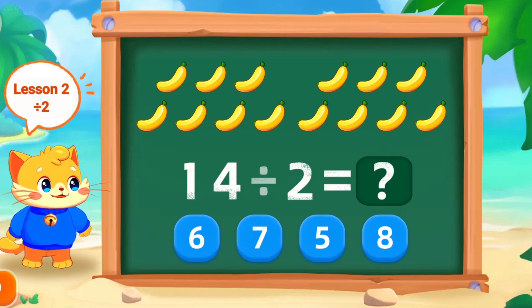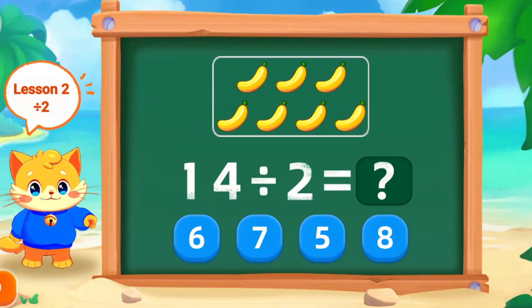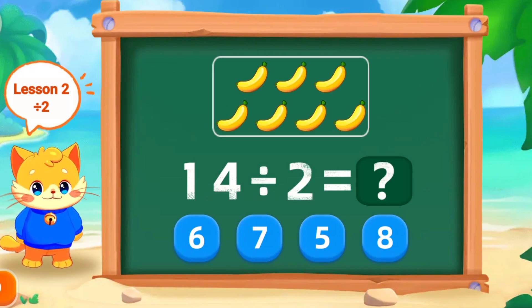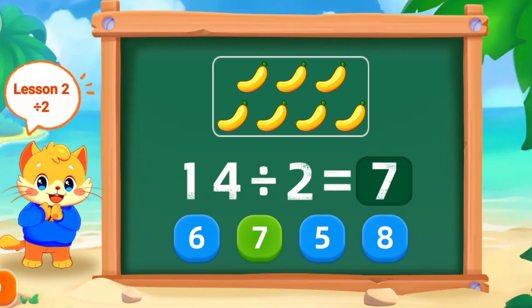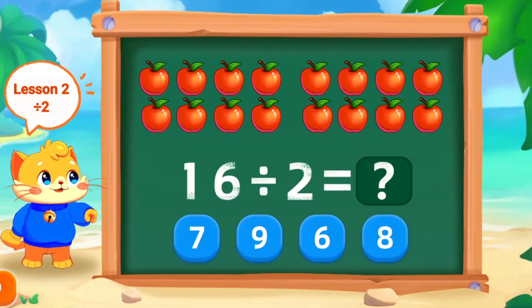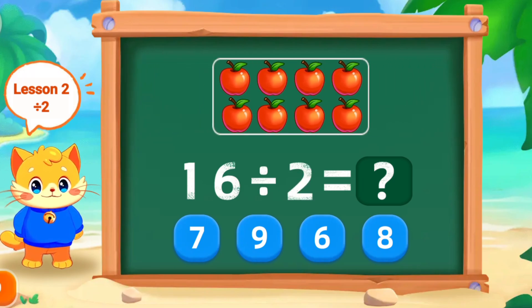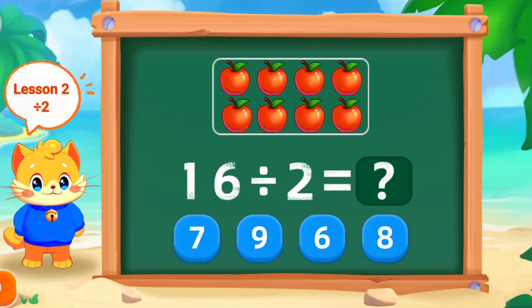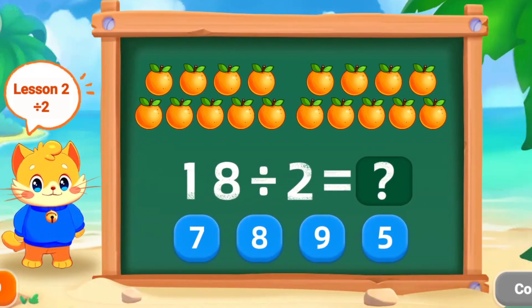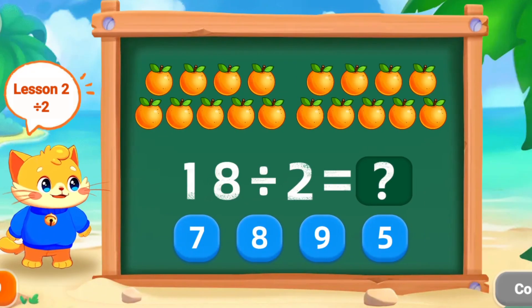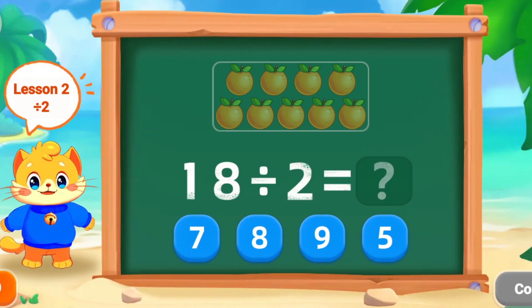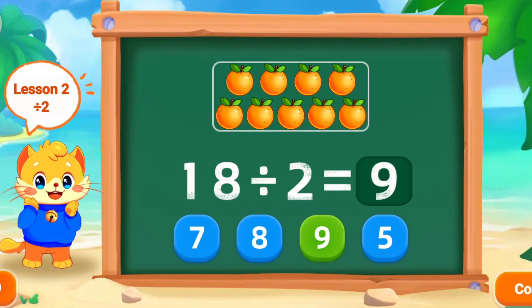14 divided by 2 is 7. Perfect. 16 divided by 2 is 8. Wonderful. 18 divided by 2 is 9. Wonderful.